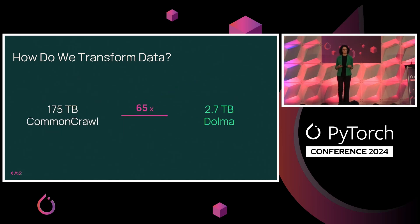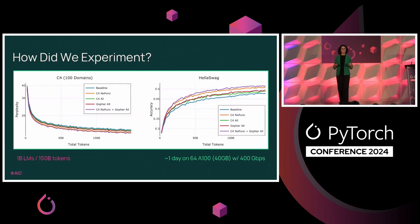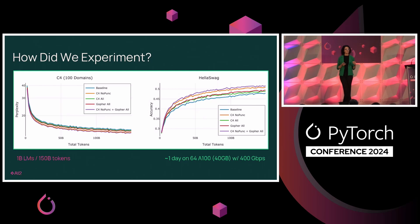With this process, looking at this gigantic Common Crawl data of 175 terabytes, we've gone down to about 2.7 terabytes of data within Dolma — so a lot of processing needs to be done for data curation. We developed a setup to make decisions about data at a smaller scale, because training large language models is expensive. You need good infrastructure, good evaluation settings, and good scaling laws to decide when your data is good enough.